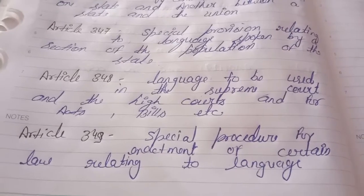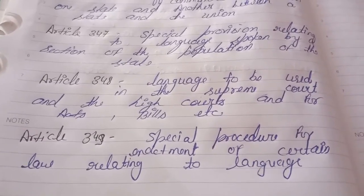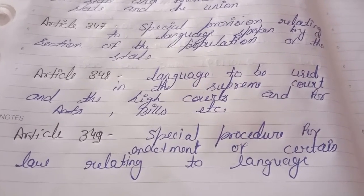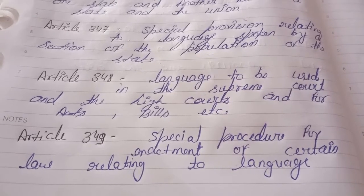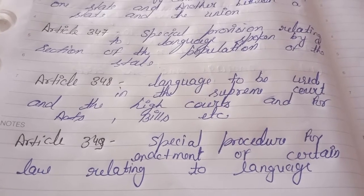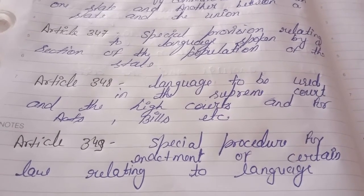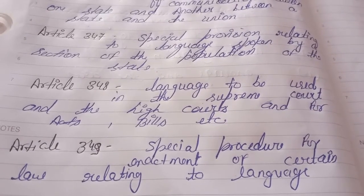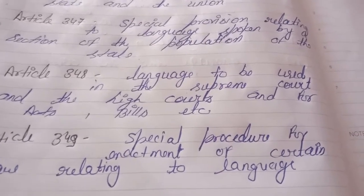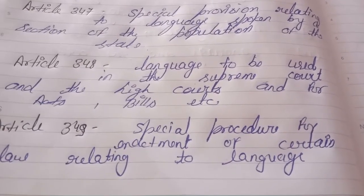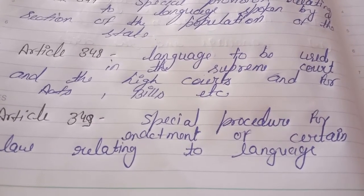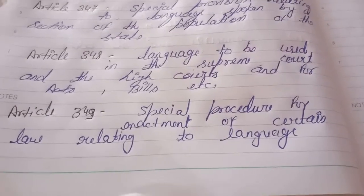Notwithstanding anything in sub-clause (b) of clause 1, where the legislature of a state has prescribed any language other than the English language for use in bills introduced in or acts passed by the legislature of the state, or in ordinances promulgated by the Governor of the state, or in any order, rule, regulation, or bye-law referred to in paragraph 3 of sub-clause (a), a translation of the same in the English language published under the authority of the Governor of the state shall be deemed to be the authoritative text thereof in the English language under this article.